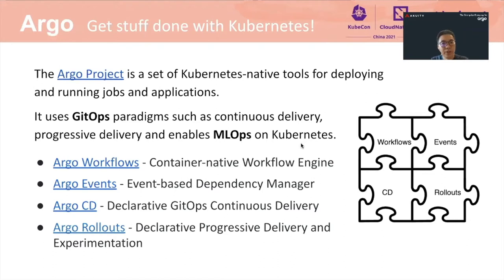The Argo project is a set of Kubernetes-native tools for deploying and running jobs and applications. It uses GitOps paradigms such as continuous delivery and progressive delivery, and enables ML Ops on Kubernetes. It is made of four independent Kubernetes-native products: Workflows, Events, CD, and Rollouts. We see teams use different combinations of those projects to solve their unique challenges.